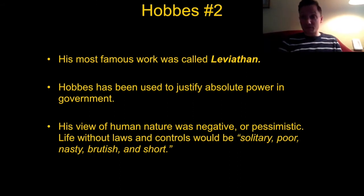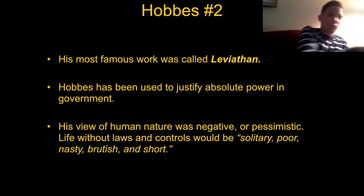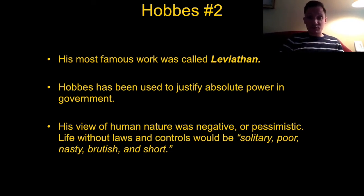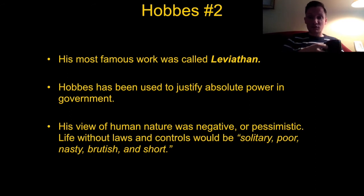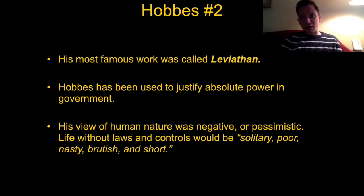His most famous work is called the Leviathan. If any of you know what a Leviathan is, it's like a large monster — so he's talking about the monster of human society. Hobbes has been used to justify absolute power in government. His views on human nature are very negative and pessimistic. He believes that life without laws is going to lead to solitary, poor, nasty, brutish, and short-lived lives.